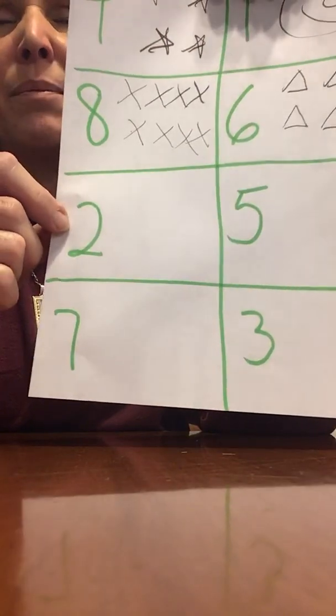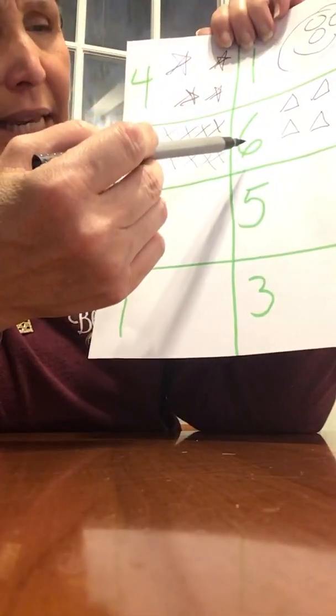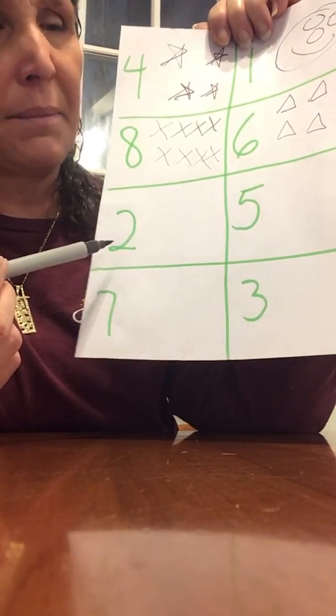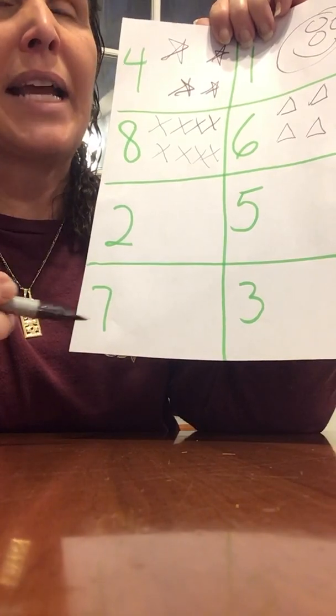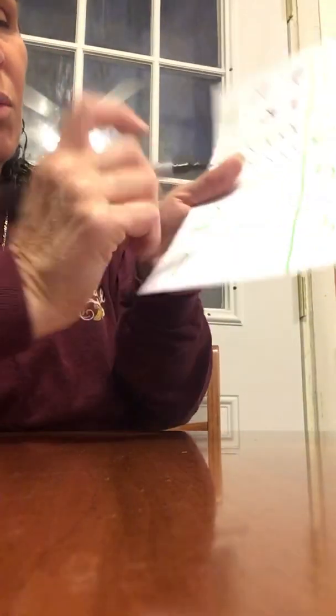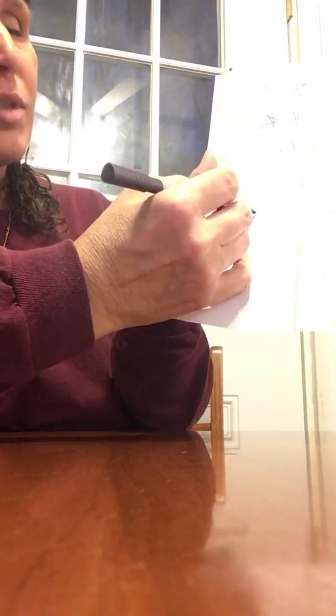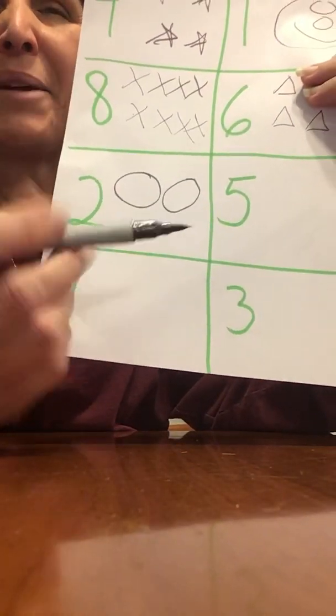What is this number? It is smaller than six. This was six. This number is smaller than six. This number is two. Like I have two hands and two feet. We're going to draw two circles. Let's count them. One, two. Great job.